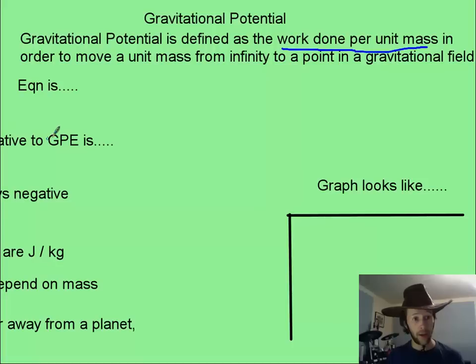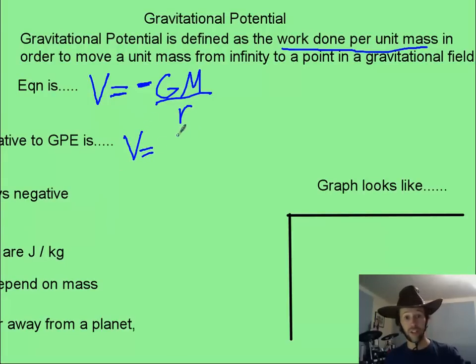Now, the equation for this, we usually use a capital V, not only for electrical potential, but also for gravitational potential. It is negative big G mass of your planet divided by the distance away from the center of the planet. Now, this will be similar or related to what you know as your gravitational energy. And that is that you can think of it as maybe GPE just divided by the mass of your object.